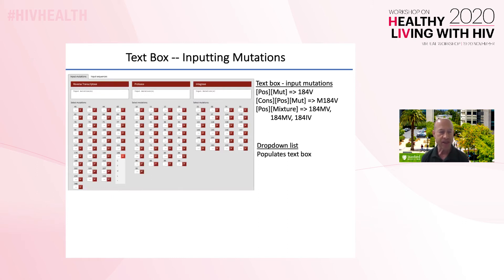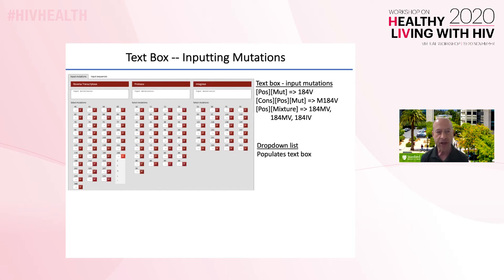There are three text boxes for entering mutations, one each for RT, protease, and integrase. Mutations are defined as amino acid differences from a consensus sequence. However, it is not necessary to know the consensus because, as shown here, it is just necessary to enter the mutation's position followed by the amino acid or amino acids present in a patient sequence. It is not uncommon for a sequence to have a mixture of two or more mutations at the same position, and when this occurs, each amino acid is listed following the position.